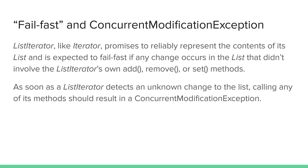Like a basic iterator, a ListIterator is expected to reliably represent the current contents of a list, and it is expected to fail fast by throwing a ConcurrentModificationException if any change occurs to the list that didn't involve the ListIterator's own modification methods. As soon as a ListIterator detects that some unknown change has taken place, calling any of the ListIterator methods should result in a ConcurrentModificationException.